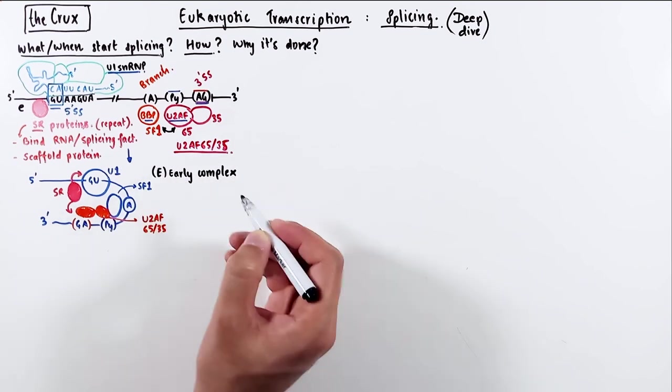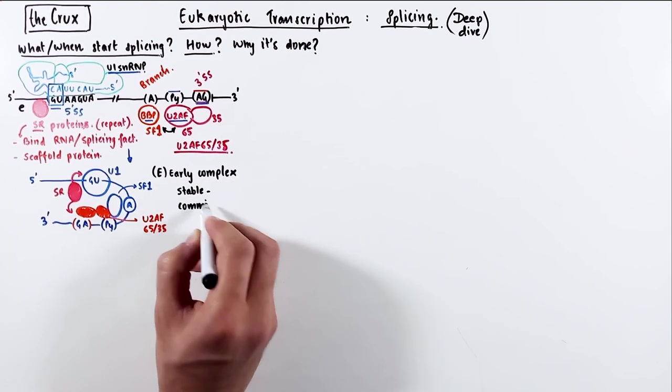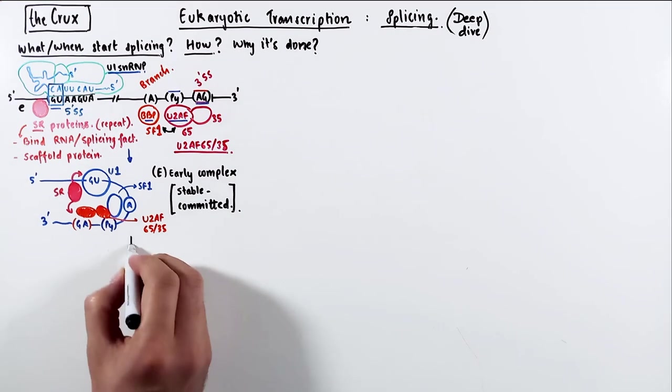by bringing the ends of the exons closer. This recognition complex is called early complex, sometimes also referred to as a stable and committed complex. After the E complex assembles,